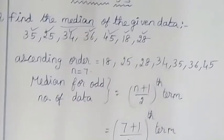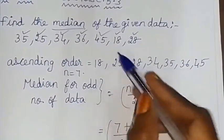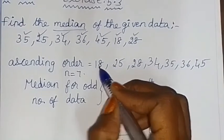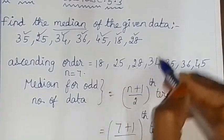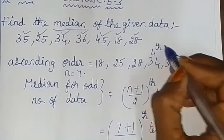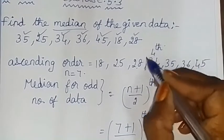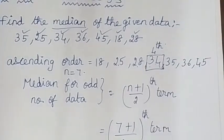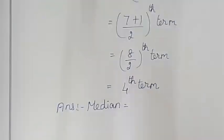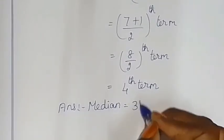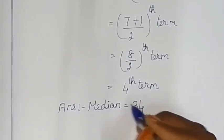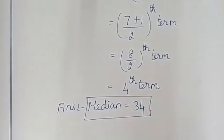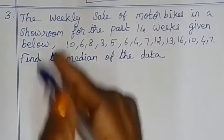We arrange the data. The 4th term is the median. Counting 1, 2, 3, 4 — this is the 4th term. So 34 is the median for the given data. The median is equal to 34.